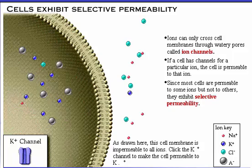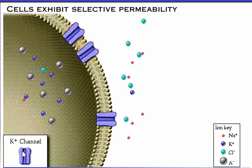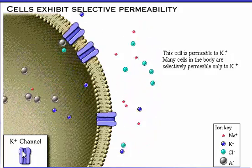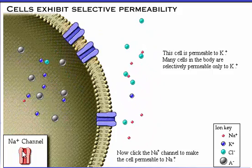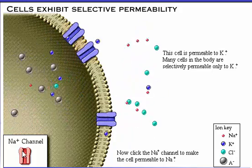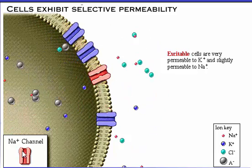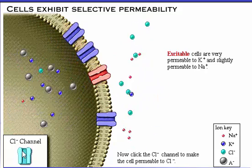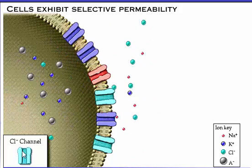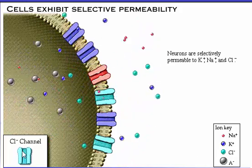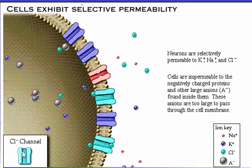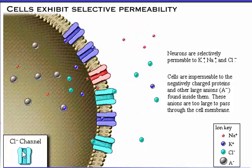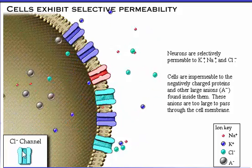As drawn here, this cell membrane is impermeable to ions. Click the potassium channel to make the cell permeable to potassium. This cell is permeable to potassium — many cells in the body are selectively permeable only to potassium. Excitable cells are very permeable to potassium and slightly permeable to sodium. Neurons are selectively permeable to potassium, sodium, and chloride. Cells are impermeable to the negatively charged proteins and other large anions found inside them, as these anions are too large to pass through the cell membrane.